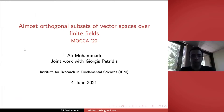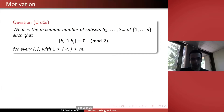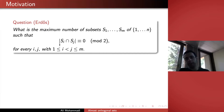As introduced, I'll talk about almost orthogonal subsets of vector spaces over finite fields. It's a joint work with Georgis Petridis. We start with a motivation: a question of Erdős, which is what is the maximum number of subsets S1 to SM of the set {1,...,N}, so that the intersection of all distinct sets has even cardinality — so it's 0 mod 2.